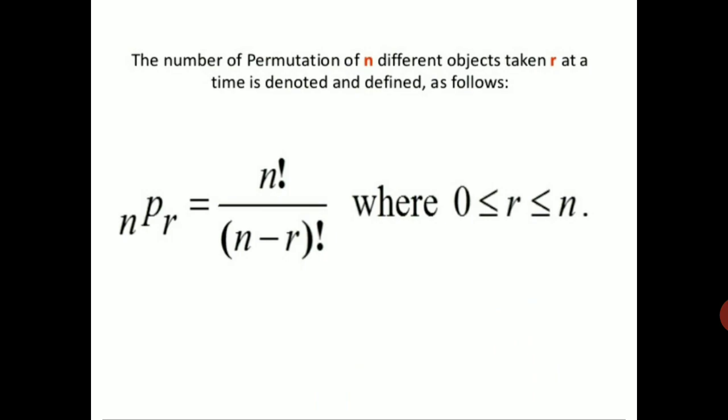The number of permutations of n different objects taken r at a time is given by the formula: nPr equals n factorial divided by (n minus r) factorial.